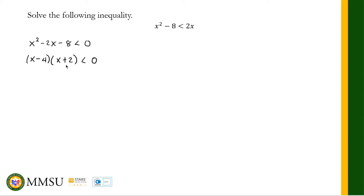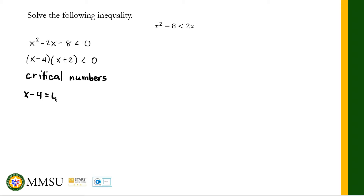The left part is now factored. Next, we solve for our critical numbers — these are points that divide the real number line into intervals. We equate each factor to zero: x minus 4 equals zero gives x equals positive 4, and x plus 2 equals zero gives x equals negative 2. These two critical numbers divide our real number line into three intervals.